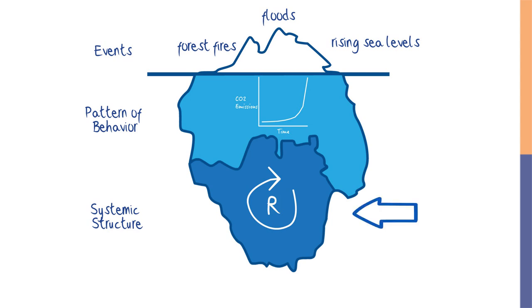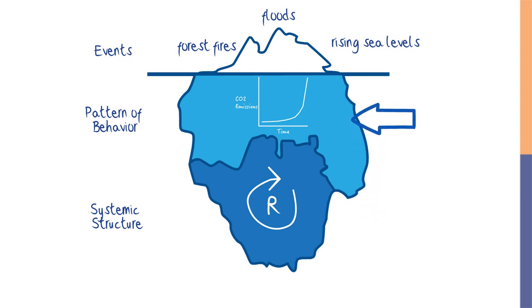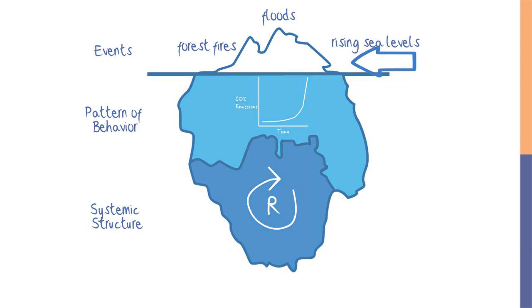Notice how structure at the bottom of the iceberg — in this case reinforcing feedback — gives rise to patterns of behavior, exponential growth, which then give rise to events at the top of the iceberg.